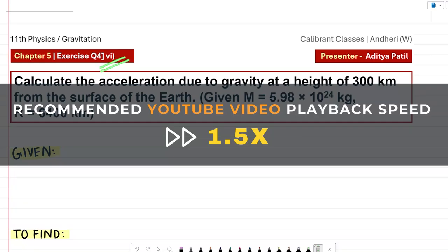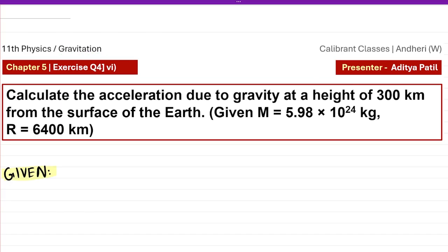In this video we are discussing the sixth numerical from the exercise for the chapter gravitation. The question states: calculate the acceleration due to gravity at a height of 300 kilometers from the surface of the earth.